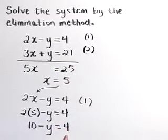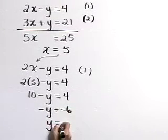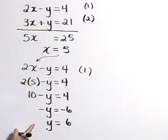Subtracting 10 from both sides gives negative y is negative 6 or y is equal to positive 6. We've solved for x and y.